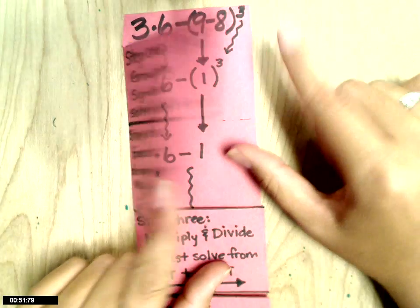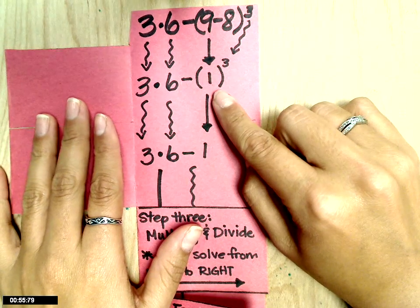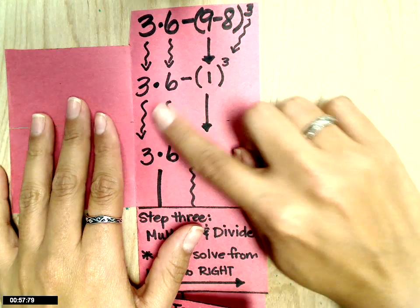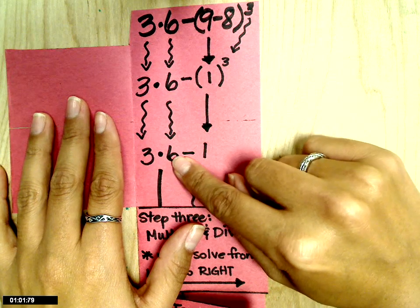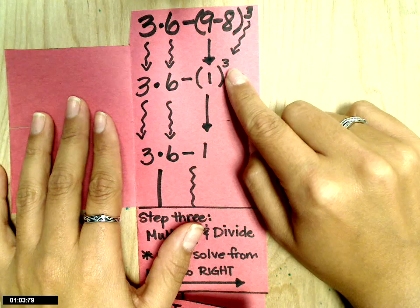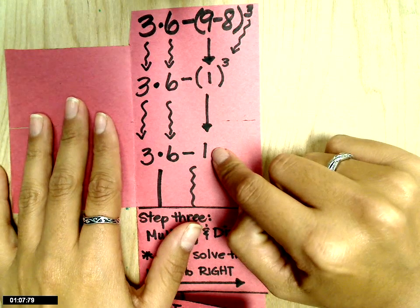If we open up our flaps, we're looking at where we stopped. We've got the 3 and the 6 that we bring down because we can't multiply yet. But we do have to solve this exponent: 1 times 1 times 1, which gives us 1.